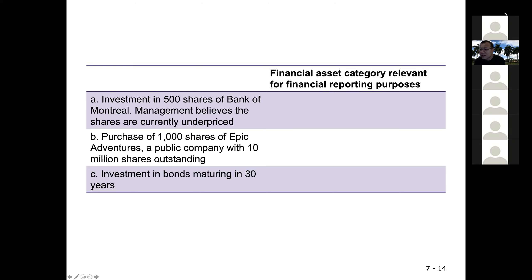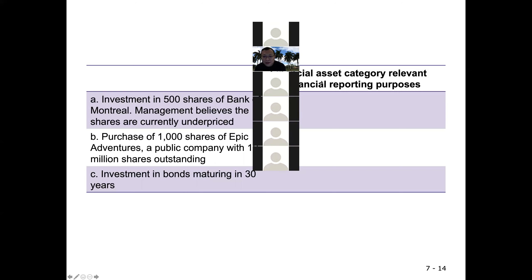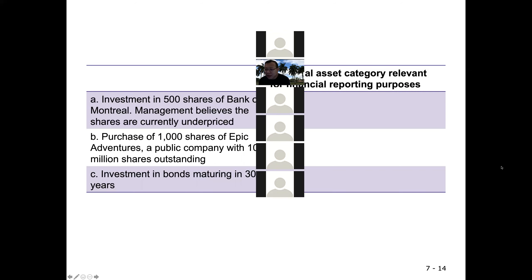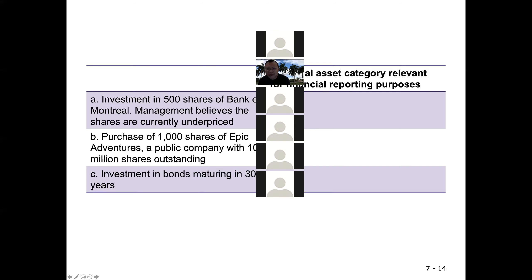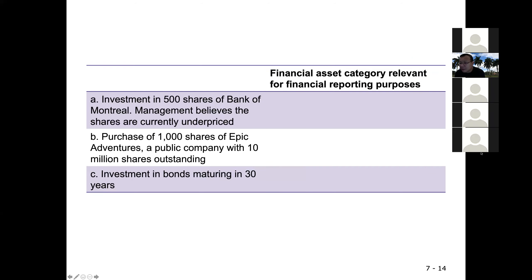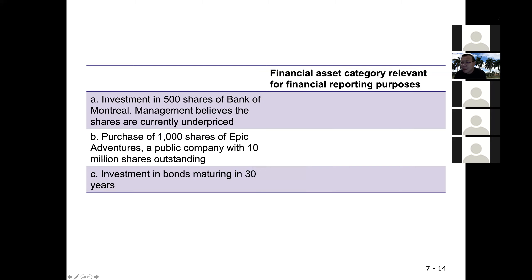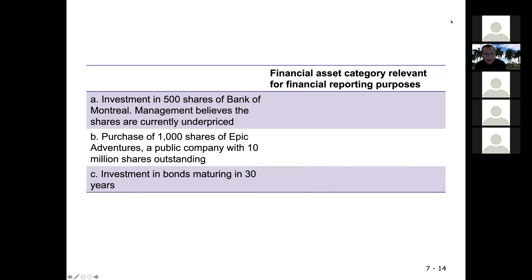Does everyone agree? Yeah, a lot of students agree — FVPL. Can one student explain to me why it's FVPL? It's because they want to take advantage of the discrepancies in the price, so it's short-term. As soon as the price goes up, they're planning to sell it. Good — your answer is right, it's FVPL, but there's a better reason for that.